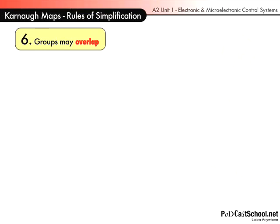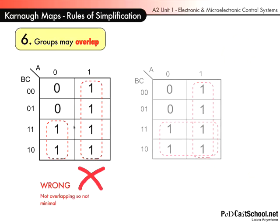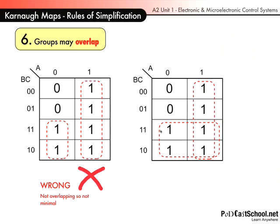Rule number six is just, it's not a rule, it's just to say that they can happen. So you can overlap groups. So you shouldn't do it like this, you should do it like this one. Again, you'll end up with expression that isn't minimal if you try this one.